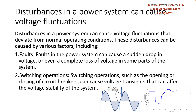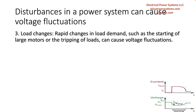Switching operations, such as the opening or closing of circuit breakers, can cause voltage transients that can affect the voltage stability of the system. Rapid changes in load demand, such as the starting of large motors or the tripping of loads, can also cause voltage fluctuations.